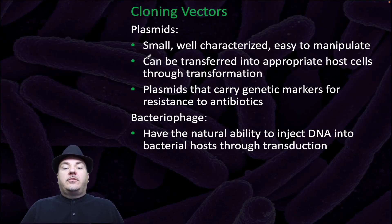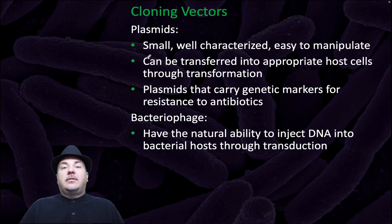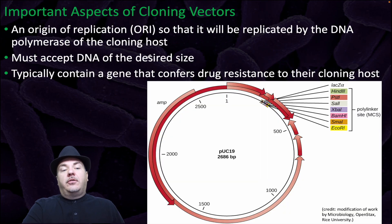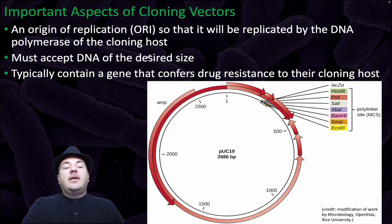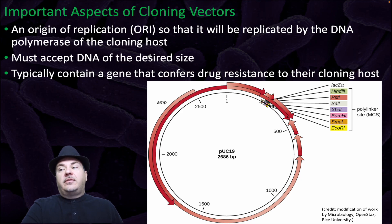Cloning vectors can be plasmids, which are small, well-characterized, and easy to manipulate. They can be transferred into appropriate host cells through transformation, and can carry genetic markers for resistance to antibiotics. Alternatively, you could use bacteriophage, which have the natural ability to inject DNA into a bacterial host through transduction. Important aspects of cloning vectors: they need to have an origin of replication so the plasmid will be replicated by the DNA polymerase of the cloning host, just like its own chromosome. It must accept DNA of a certain size, and typically contains a gene that confers drug resistance to the cloning host — so bacteria resistant to a certain antibiotic tell you they have that vector.